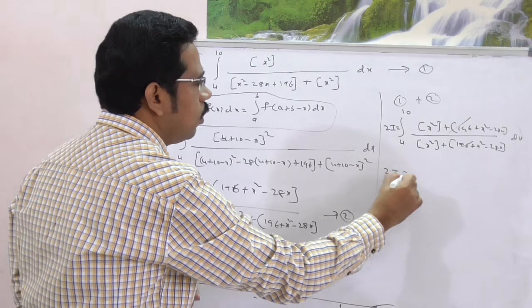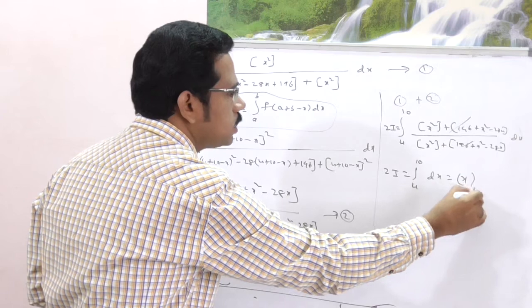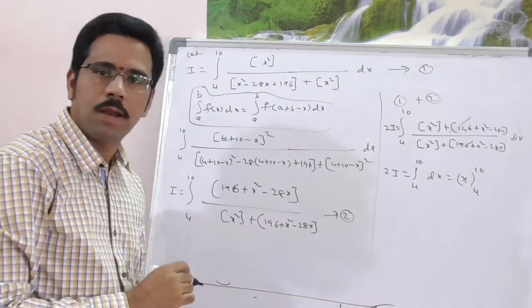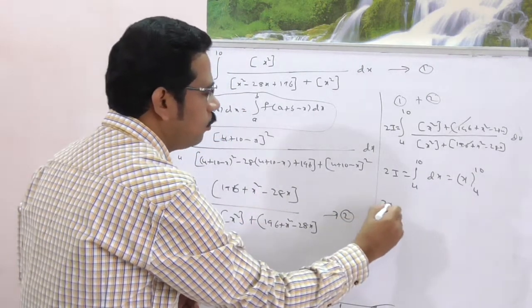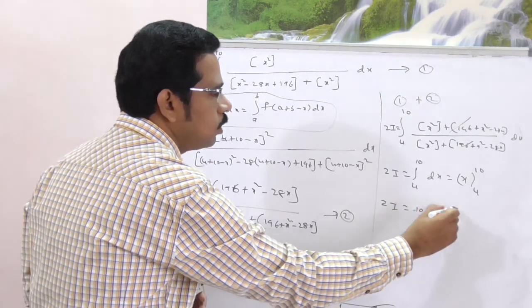Therefore, 2i is equal to integral 4 to 10 dx. This is nothing but x with boundaries 4 to 10. Integral dx is x only. Therefore, 2i is equal to 10 minus 4, that is equal to 6.